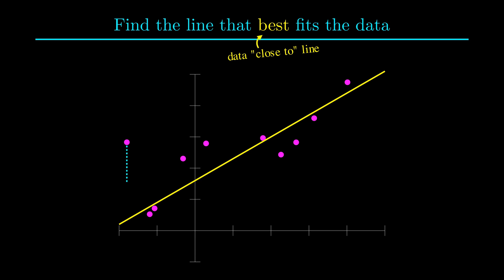To define closeness, it's natural to look at the vertical distance from each point to the line. This distance is the difference between the line's prediction and the actual data. For example, if the coordinates for this point are x1 and y1, and the equation of our line is y equals bx plus a, then the line predicts bx1 plus a at x1. So this vertical distance is y1 minus b times x1 minus a.